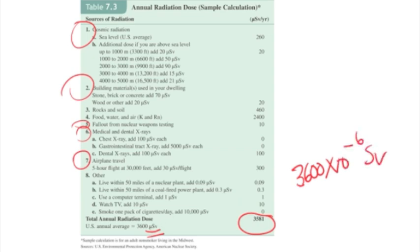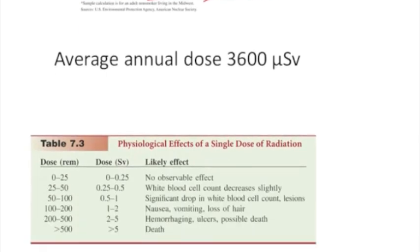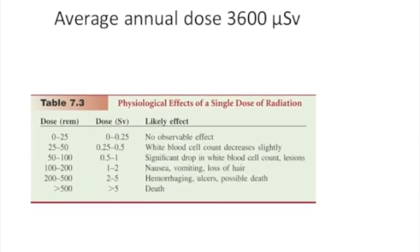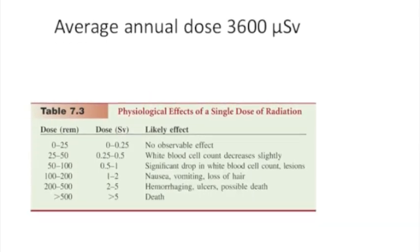I thought one thing was interesting on this table. Oh, right here, smoke. If you smoke, add 10,000 micro-sieverts per year. So this person was a non-smoker, but look at that, how much radiation, the worst thing you can do for yourself is to smoke. Anyway, so the average annual dose is 3,600 micro-SVs.